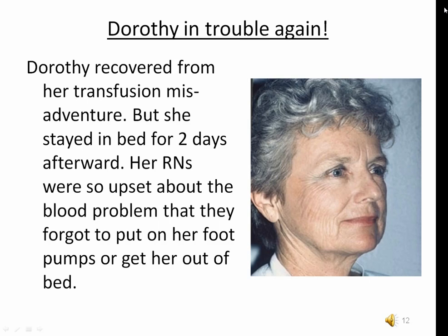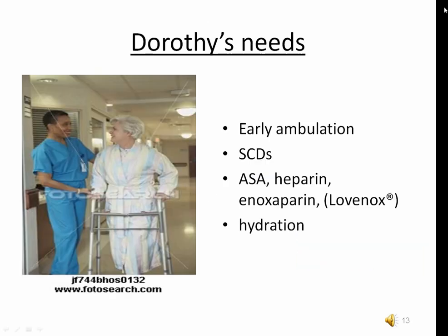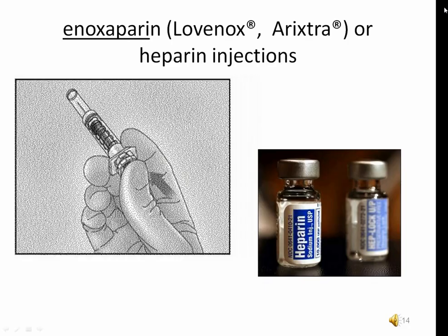In a case study, Dorothy endures one medical mishap after another — the nursing staff failed to put on her foot pumps or get her out of bed, and nobody noticed that DVT prevention medication was never ordered. The very best thing you can do to prevent thrombosis in the lower extremities is promote early ambulation, followed by SCDs and medications. Typically a patient with any risk for DVT will receive anticoagulation therapy — heparin and enoxaparin are very common.